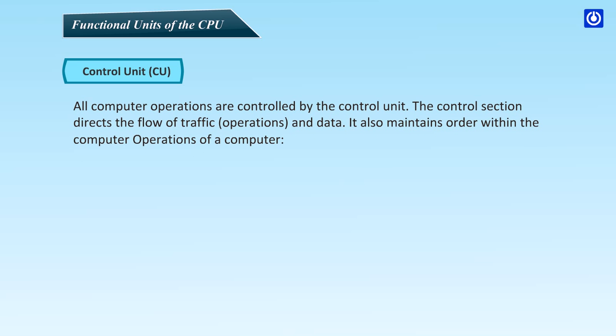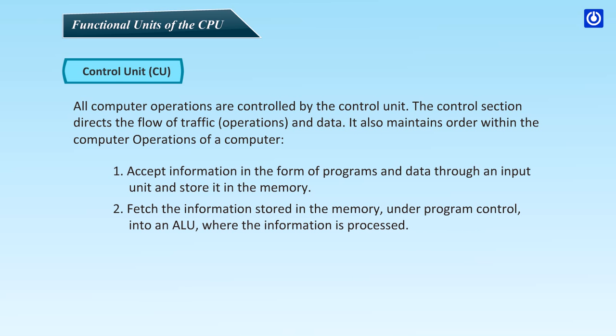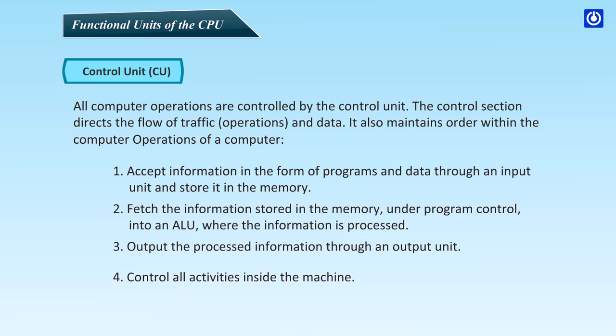Control Unit (CU): All computer operations are controlled by the control unit. The control section directs the flow of traffic, operations, and data. It also maintains order within the computer operations. It accepts information in the form of programs and data through an input unit and stores it in the memory. It fetches the information stored in the memory under program control into the ALU where the information is processed. It outputs the processed information through an output unit and controls all activities inside the machine.